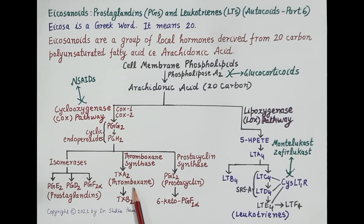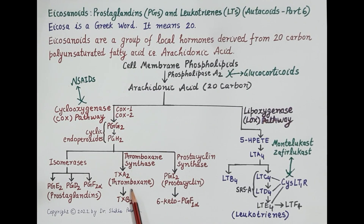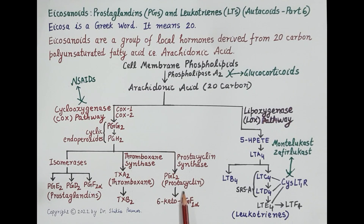Thromboxane A2 is primarily synthesized in platelets. It is highly unstable and spontaneously converts to thromboxane B2. Thromboxane A2 increases platelet aggregation and causes vasoconstriction.